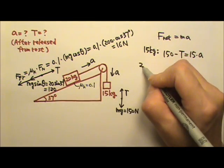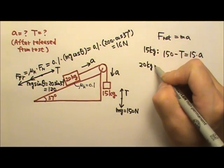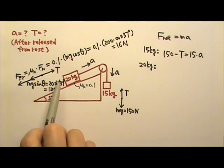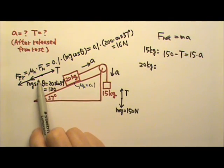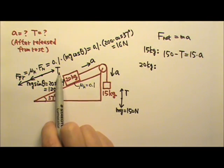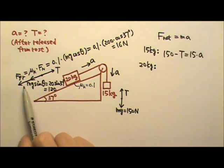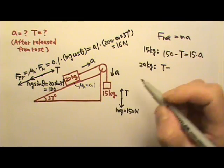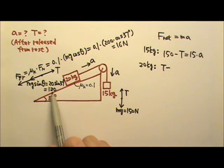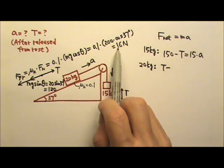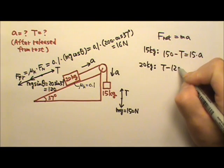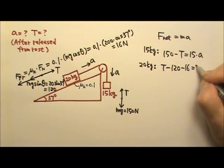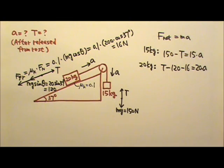For the 20 kg box, the acceleration goes up the incline, so the up-the-incline tension is bigger than these two. So you go to the bigger side, T minus the smaller side where you have 120 and the 16. So minus 120 minus 16 equals M times A.